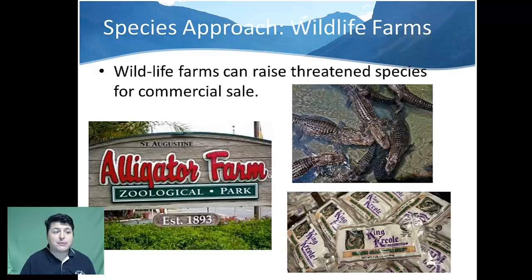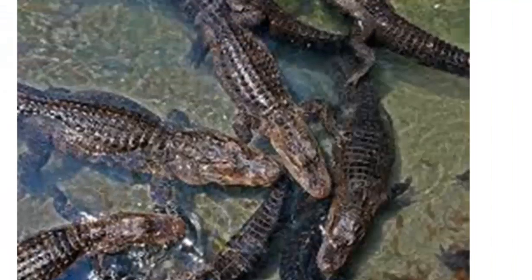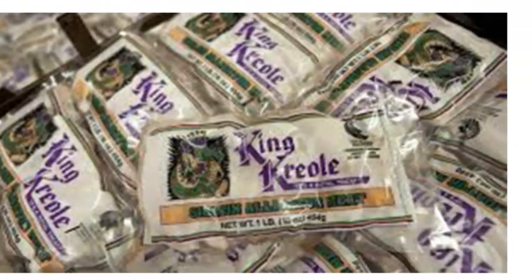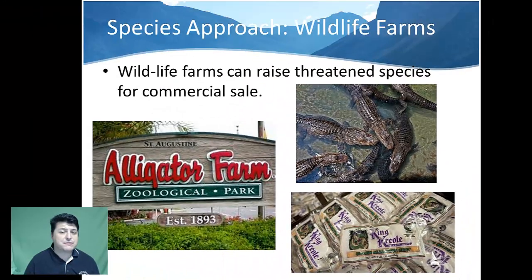Wildlife farms are another way that we can have a species approach to sustaining biodiversity. Wildlife farms can raise threatened species for commercial sale. For example, in Florida there are alligator farms so that alligators would not be overly consumed in the production of leather or meat products. In certain parts of Central and South America, there are butterfly farms designed to raise butterflies for reintroduction to maintain populations of rare and endangered butterflies.